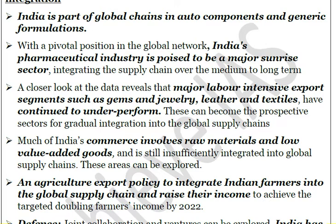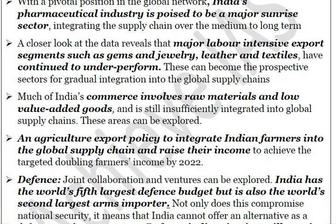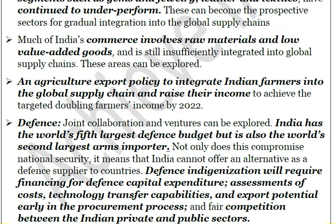India must explore areas to move up the value chain ladder. Agriculture export policy must be framed so that farmers are integrated into global supply chains, enabling them to raise income and helping India achieve the goal of doubling farmers' income by 2022. India's defense budget is the fifth largest in the world, yet India is also the second largest importer of defense equipment. Focus must be on indigenization of technology and producing products that are in demand in global markets.